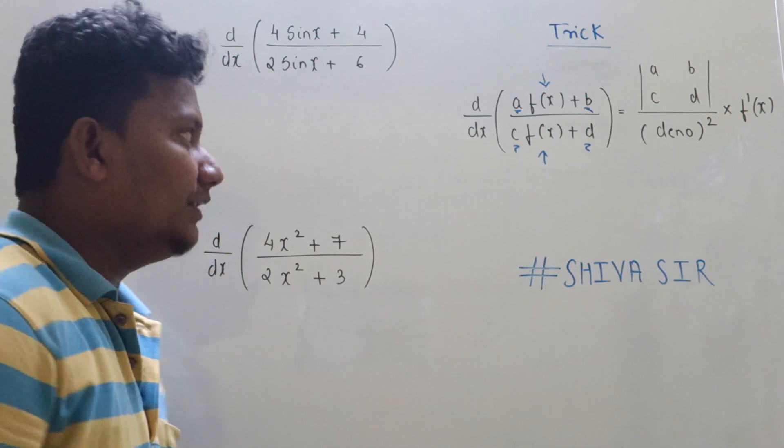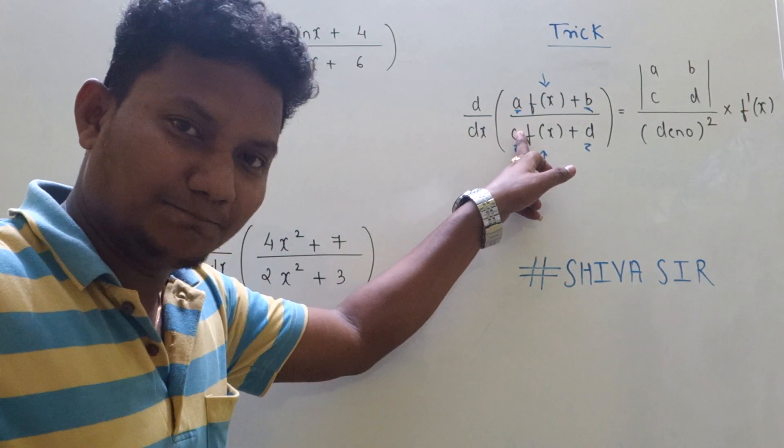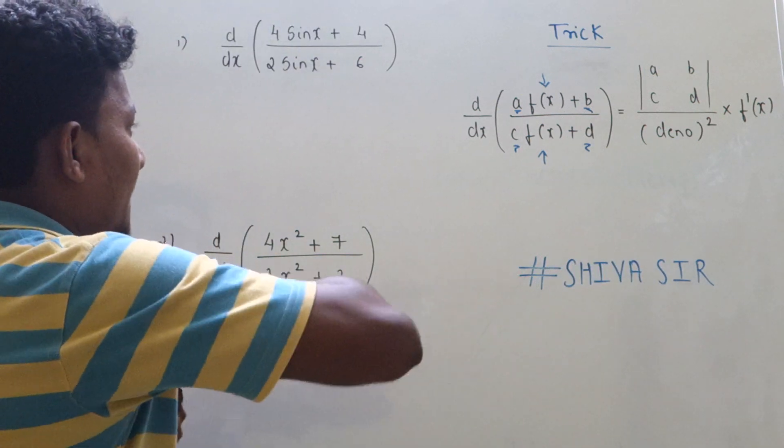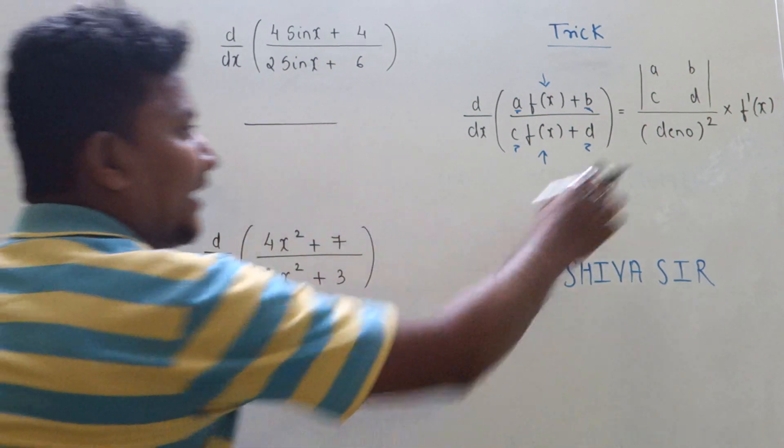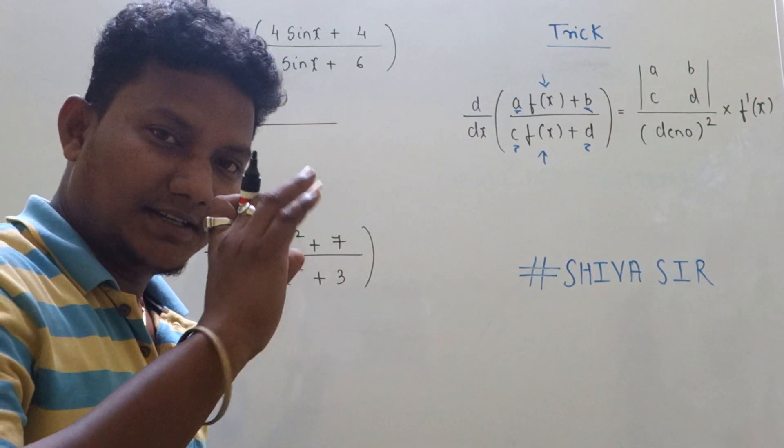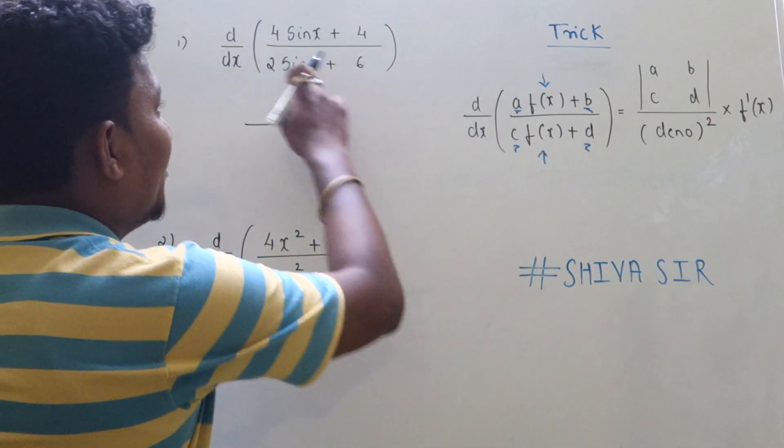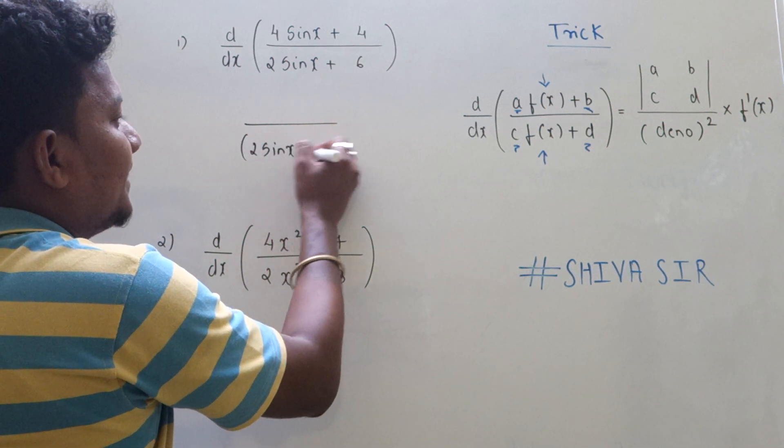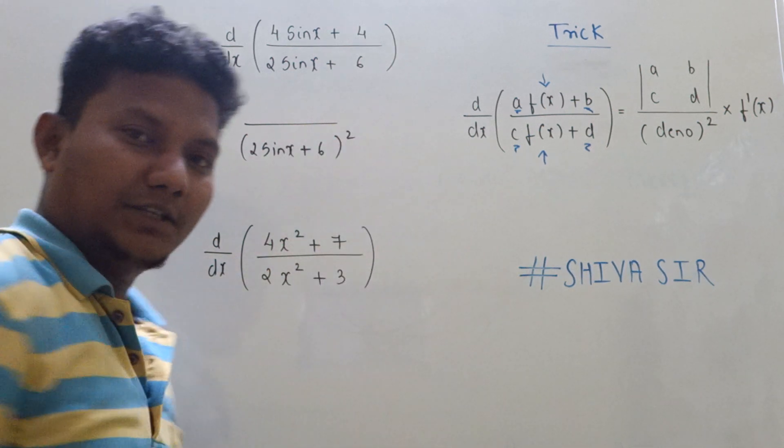Simply what you have to do: whenever the pattern of the quotient is like this, write in the denominator the same as it is, taking square. So what is the denominator here? That is (2sin(x) + 6)². Got the idea?